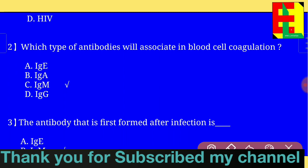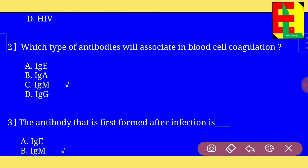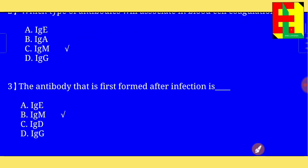Question number two: which type of antibodies will associate in blood cell coagulation? From the four options — IgE, IgA, IgM, and IgG — option C is the right answer: IgM antibody will associate in blood cell coagulation.